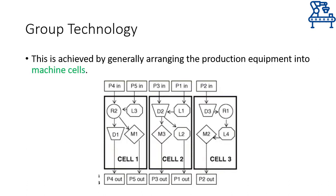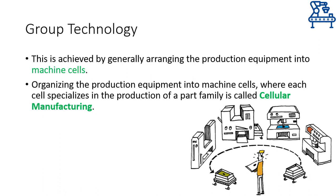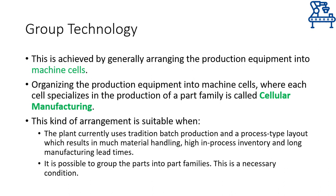This is achieved by creating machine cells, where a machine cell may consist of more than one machine but specializes in production of one kind of part family. This organization of production equipment into a machine cell is referred to as cellular manufacturing. This kind of manufacturing is normally suited for situations where you want to reduce material handling and hence manufacturing lead times, and the parts to be manufactured should be grouped into families. If these two conditions are met, cellular manufacturing will prove to be beneficial.